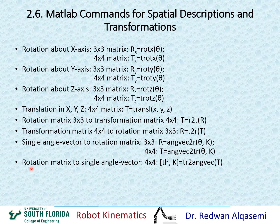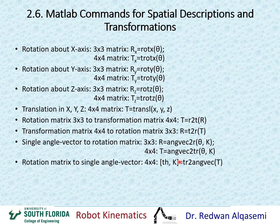If you would like to convert a rotation matrix to a single angle-vector representation and you have a 4x4 transformation matrix, then you can use tr2angvec. The input argument is the 4x4 transformation matrix. By placing two variable names in square brackets on the output side, it gives you two outputs: the first is named theta and the second is named k, the axis vector.